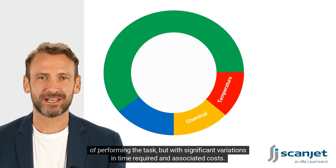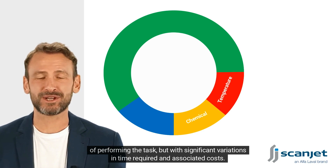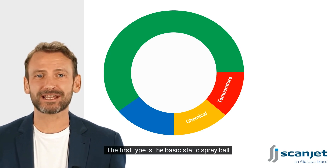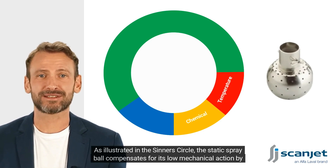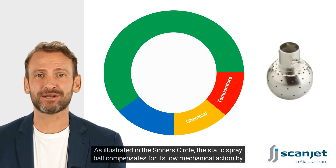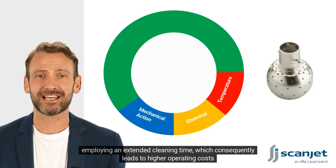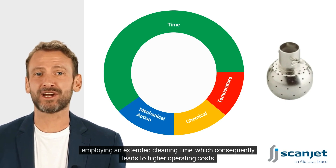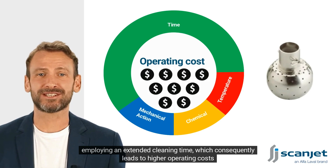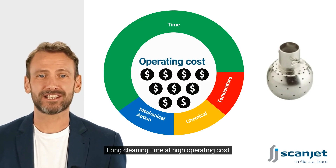The first type is the basic static spray ball. As illustrated in the Sinner's Circle, the static spray ball compensates for its low mechanical action by employing an extended cleaning time, which consequently leads to higher operating costs — long cleaning time at high operating cost.